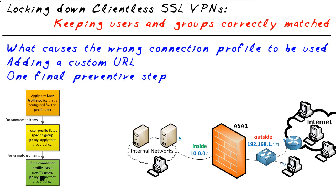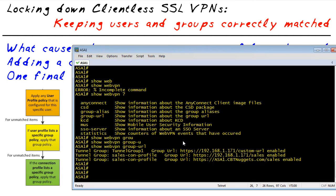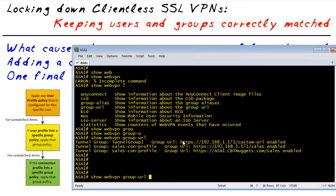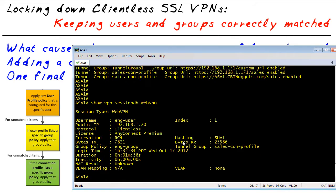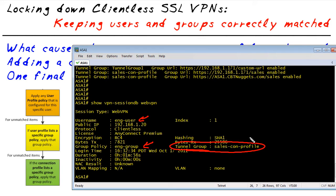We can verify this quickly from the command line. Looking at the session details, it shows his username is engineering-user, his group is engineering-group, but the tunnel group — which is another name for the connection profile — is the sales connection profile. That connection profile is linked to the sales group, so indeed he is getting incorrect policy.